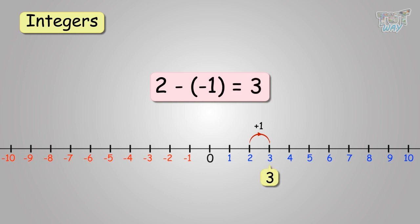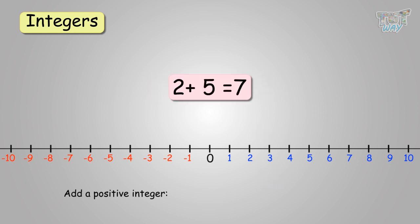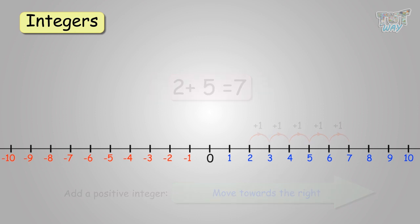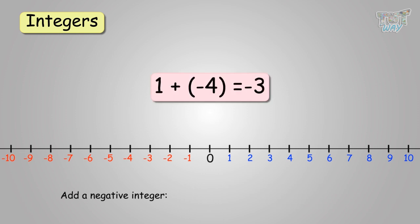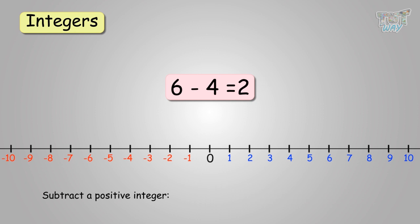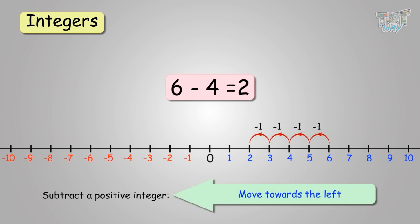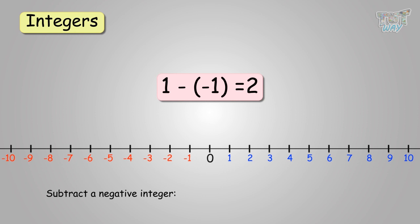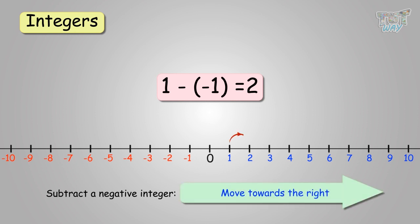I am repeating the rules once again. If you had to add a positive integer, you will move towards the right. If you had to add a negative integer, you will move towards the left. If you had to subtract a positive integer, you will move towards the left. And if you had to subtract a negative integer, you move towards the right. You need practice. These are four different rules for subtracting integers on a number line, and more practice makes this easier.